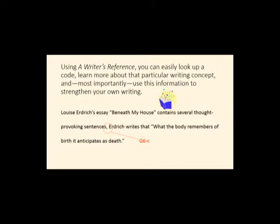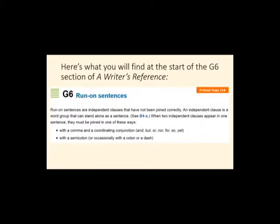Using A Writer's Reference, you can look up that code, and more importantly, you can learn about that particular writing concept and use that information to strengthen your own writing. If you were to go to the G6 section of A Writer's Reference, you would first of all read that run-on sentences are independent clauses that have not been joined correctly. It would explain that an independent clause is a word group that can stand alone as a sentence. When two independent clauses appear in one sentence, they have to be joined in one of these ways: you can use a comma and a coordinating conjunction—and, but, or, nor, for, so, or yet—or a semicolon.